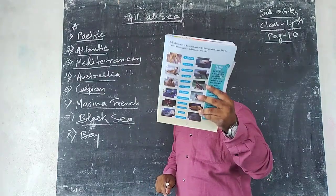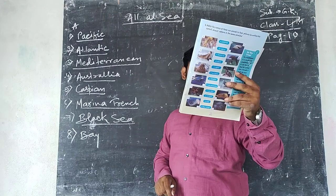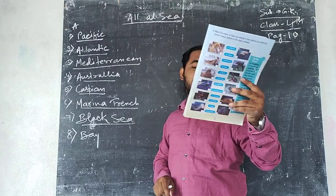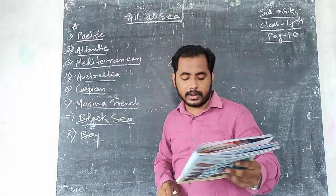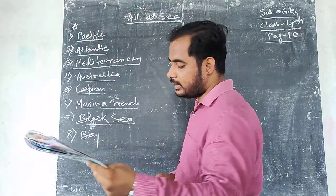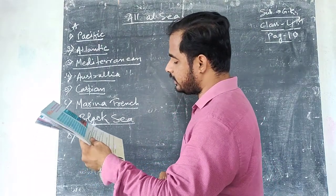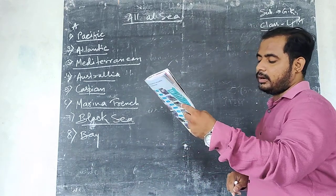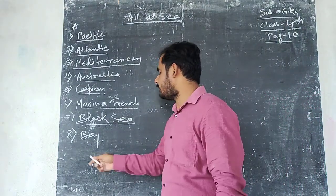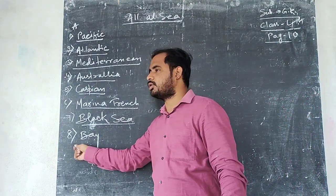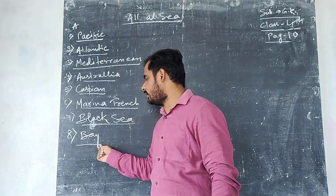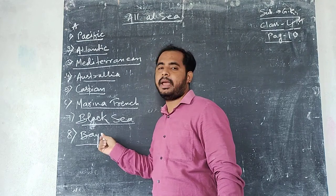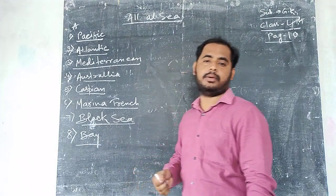Question number 8: This is a part of a sea or of a large lake, partly surrounded by land. The answer to question number 8 is Bay.